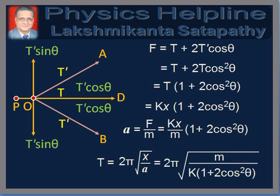Now, to find the net restoring force acting on the body, we proceed as follows. The three forces acting on the body are T along OD, and T dash along OA and OB. While stating this, we have used an approximation. The forces are acting on the body when it is at P, so the directions should be along PD, PA, and PB. But the displacement X is so small that we assume the forces to act along OD, OA, and OB without any loss of accuracy. Therefore, we resolve T dash into components along and perpendicular to OD. The two components T dash·sin theta perpendicular to OD cancel out being equal and opposite, and the two components T dash·cos theta along OD add up to give 2T dash·cos theta.